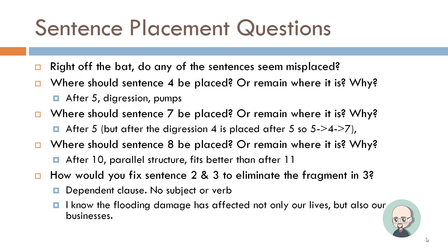Do any of these sentences seem misplaced? Where should sentence four be placed or remain where it is, and why? After sentence five — it's a digression. The mention of pumps sets the speaker off: 'Further in those areas with basements that need water pumps and vacuuming, which cost the average homeowner nearly $7,000 each.' So he's going to digress there: 'To digress momentarily, I do want to talk about a really good discount on pumps.' A digression is going off topic a little — it's kind of on topic vaguely but off the beaten track, somewhat irrelevant. So that's why it goes after five.